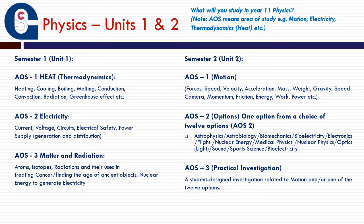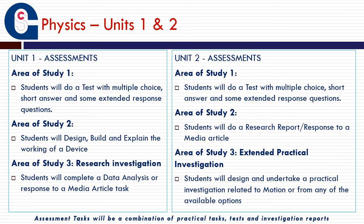Now for Physics Units 1 and 2. In Unit 1 Physics we look at thermodynamics — heat and how it transfers — and we study electricity, which involves building and testing circuits as well as learning about how electricity is generated. We also cover radiation and explore how it can be used in society. In Unit 2 we learn about motion and the factors that affect it. Students also get to choose an area of physics to investigate in more detail from a list of 12 options, which is definitely a highlight of Units 1 and 2 Physics.